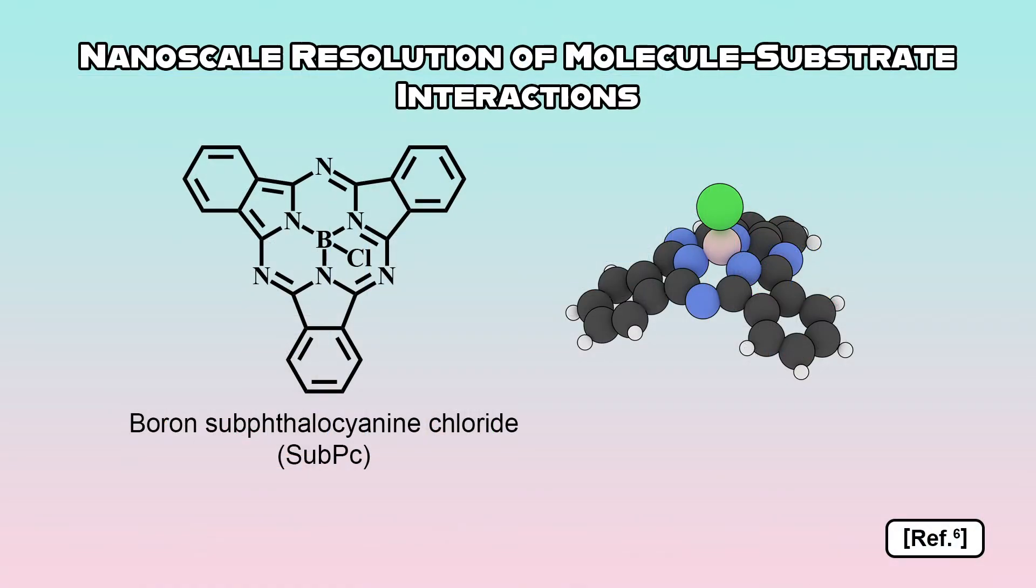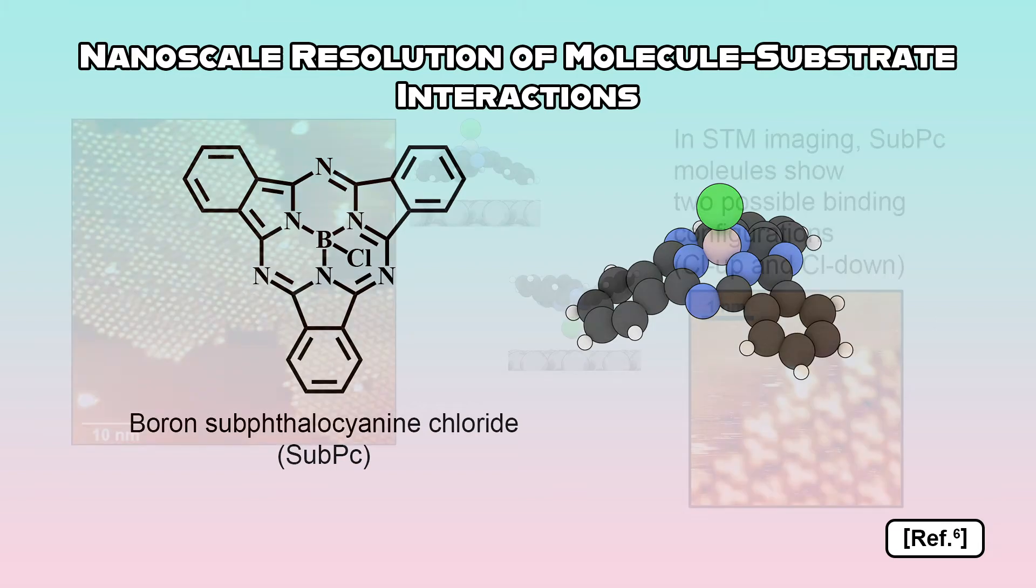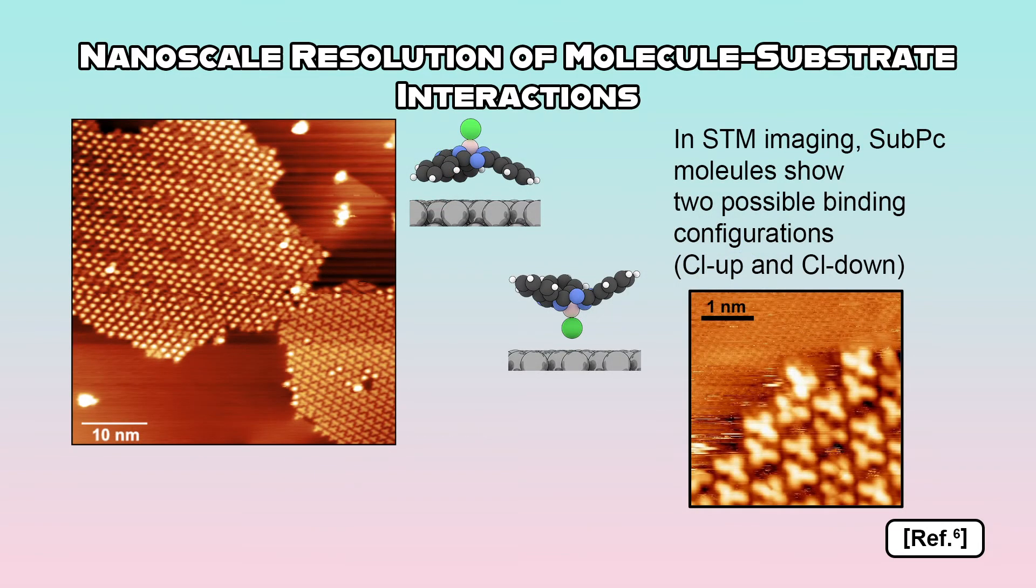Boron sub-phthalocyanine chloride, or sub-PC, is a unique member of the phthalocyanine family composed of three isoindole lobes which form a three-legged bowl structure with a central boron atom that is connected to a chlorine atom forming a polar boron chloride bond. On a silver 1-0-0 surface, STM imaging identified two possible binding configurations for sub-PC molecules.